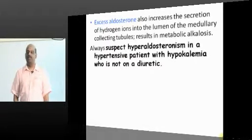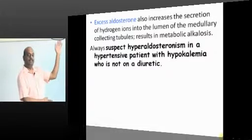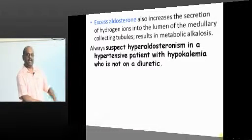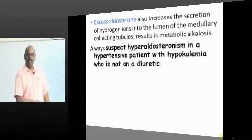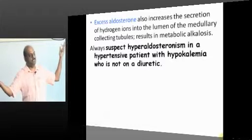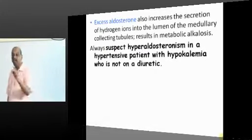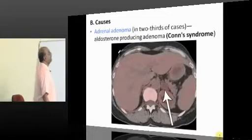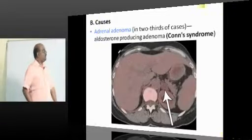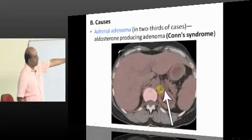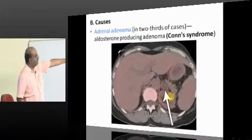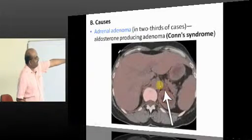Once you suspect Conn's syndrome, you perform an ultrasound abdomen, then a CT abdomen to identify the adenoma and remove it. The mass sitting above the kidney is the adenoma.